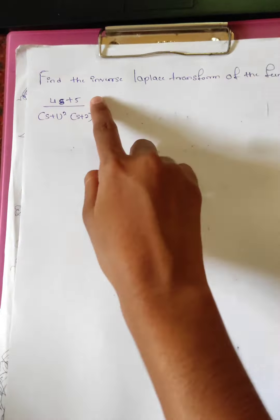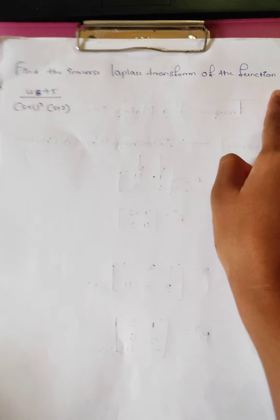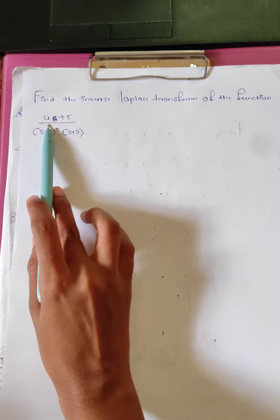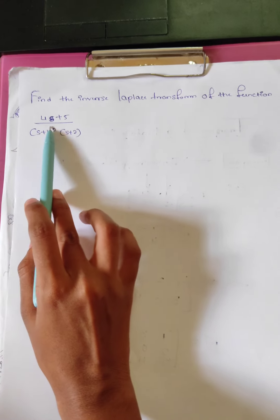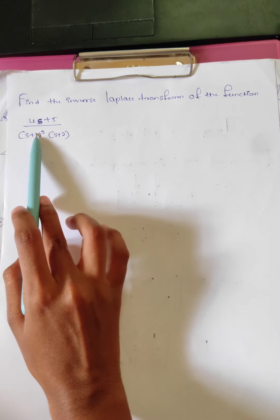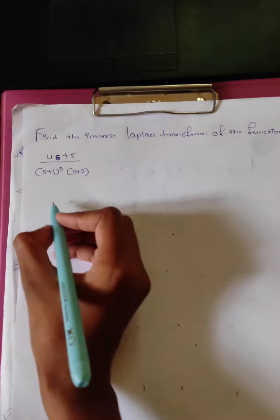Hello, in this video we will find the Laplace transform of the function. Here we have an example: 4s plus 5 upon (s plus 1) squared times (s plus 2).